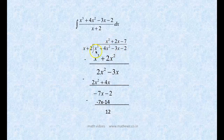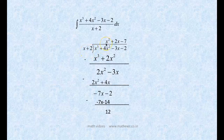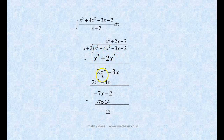The highest power in the numerator is x³. x³ divided by x is x², so we write x² here. Multiply x² with (x + 2) to get x³ + 2x². Subtract: x³ cancels and we get 4x² - 2x² = 2x². Bring down the -3x.